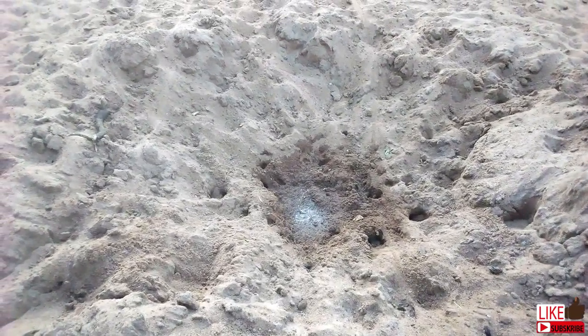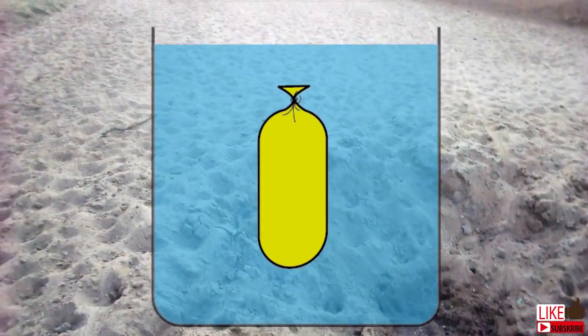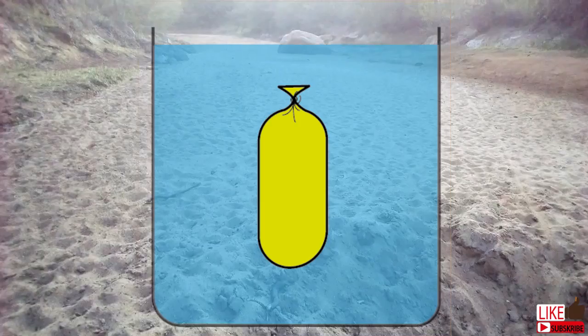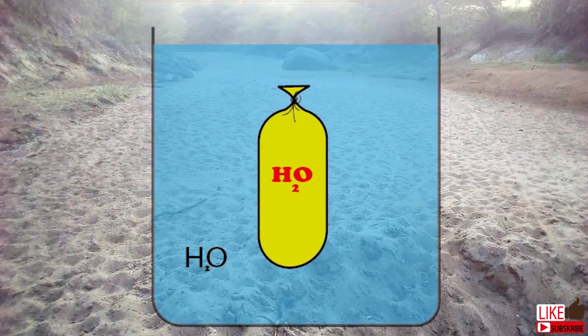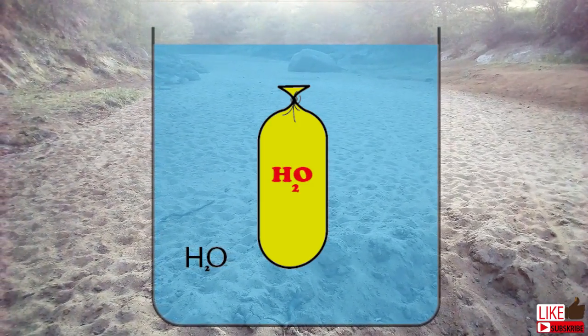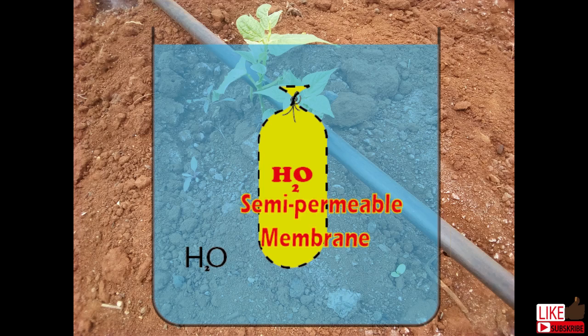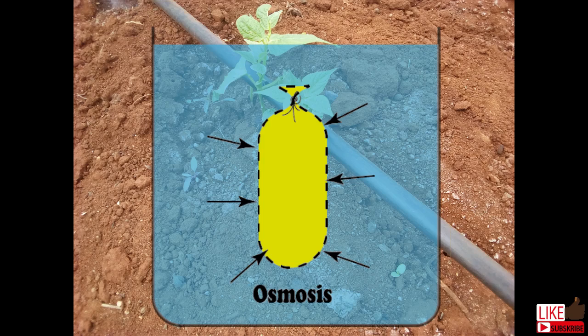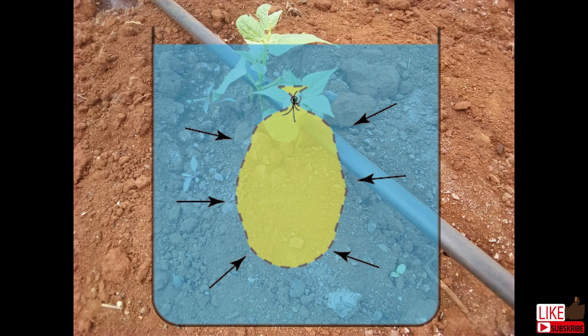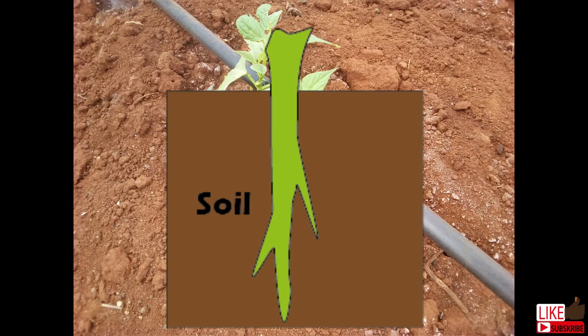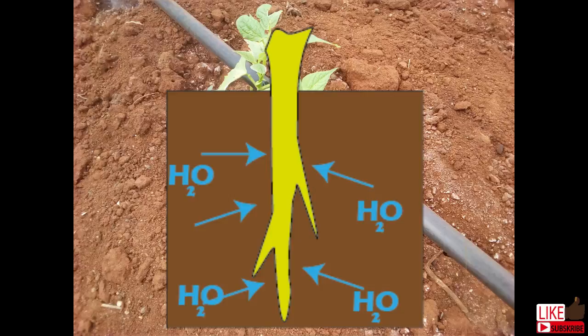Back in high school we learnt of a process called osmosis. Remember filling a small plastic bag with salty water inside a container with fresh water? The bag had microscopic pores that allowed fresh water to flow gradually into the bag over some time. Imagine this process happens in plant roots — this is how plants absorb water.